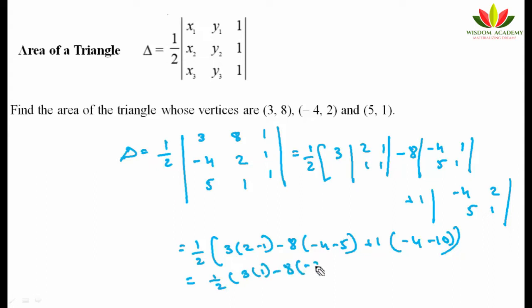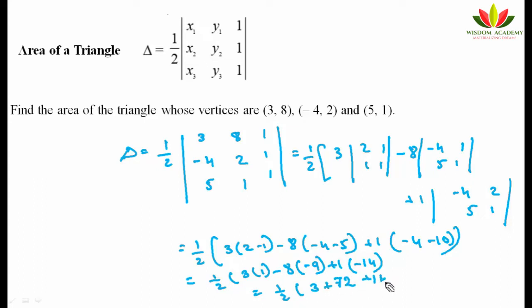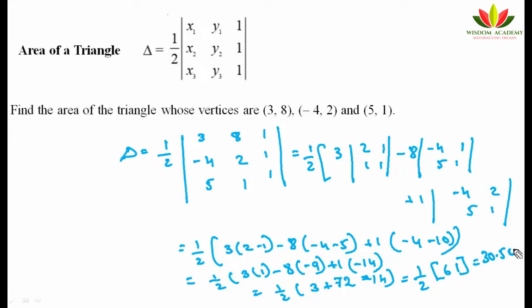Simplifying: 1/2 times [3(1) - 8(-9) + 1(-4)], which gives 1/2 times [3 + 72 - 14] = 1/2 times 61 = 30.5 square units.